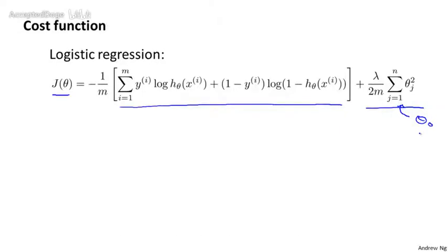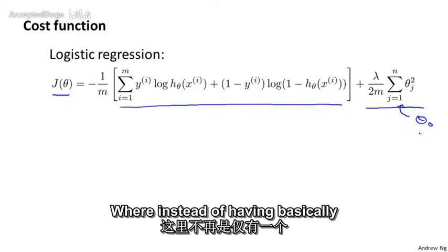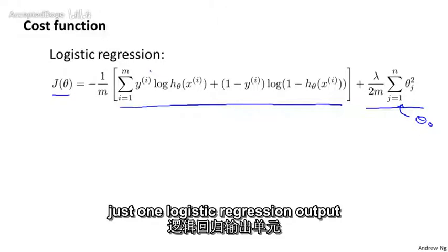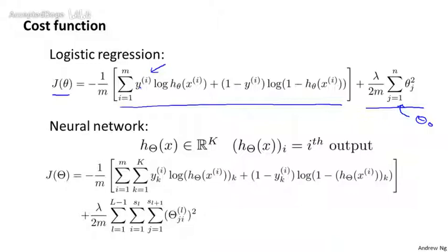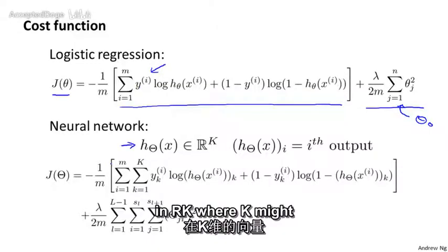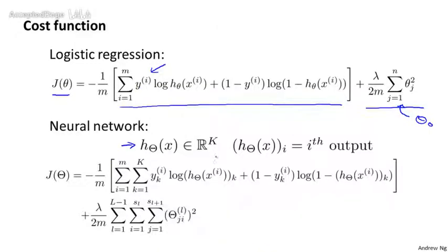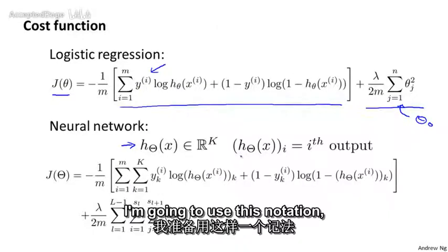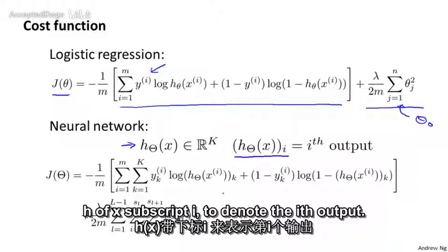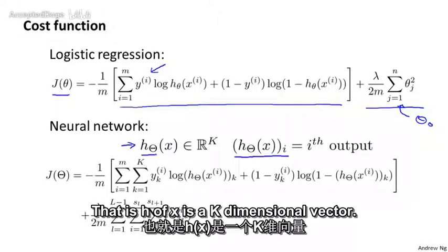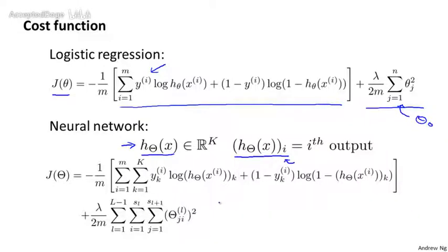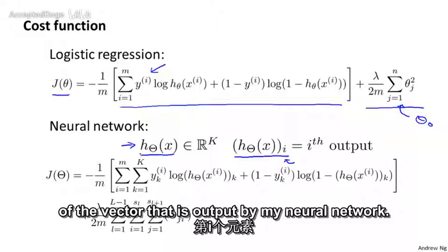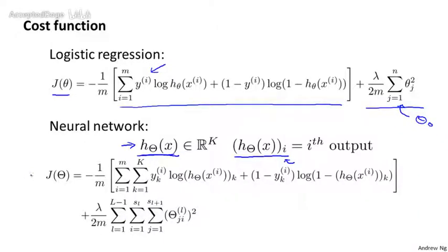For a neural network, our cost function is going to be a generalization of this where instead of having basically just one logistic regression output unit, we may instead have K of them. So here's our cost function. Our neural network now outputs vectors in R^K where K might be equal to 1 if we have a binary classification problem. I'm going to use this notation h(x)_i to denote the i-th output. That is, h(x) is a K dimensional vector and so this subscript i just selects out the i-th element of the vector that is output by my neural network.